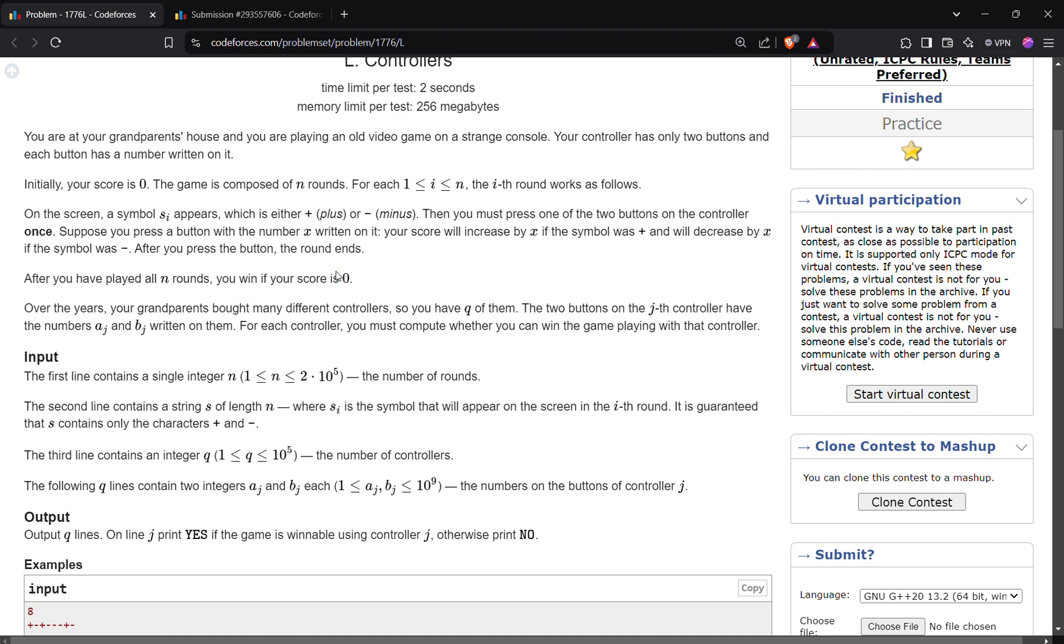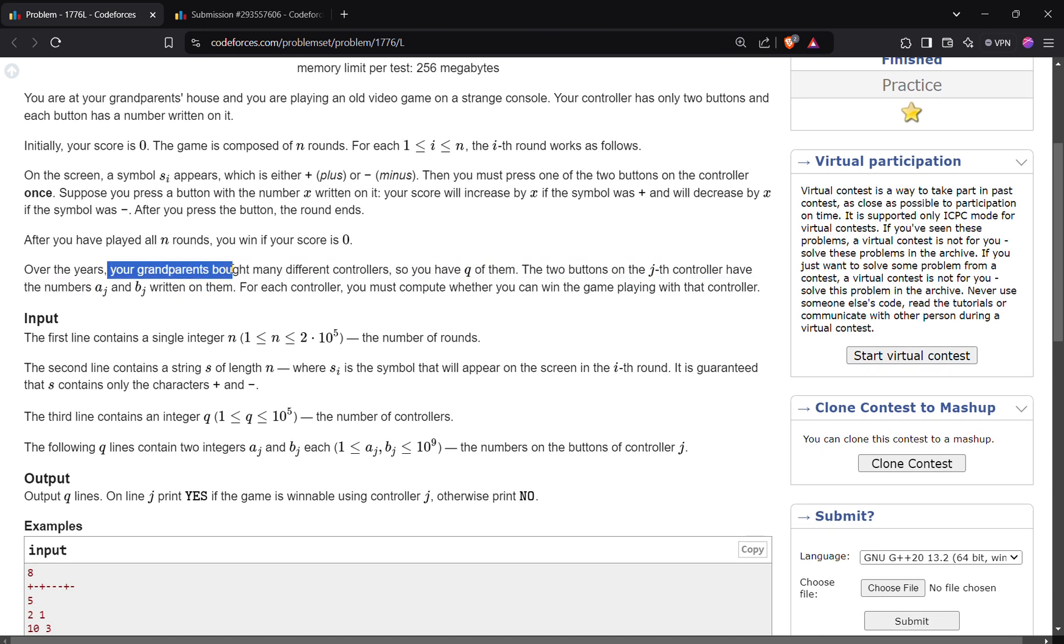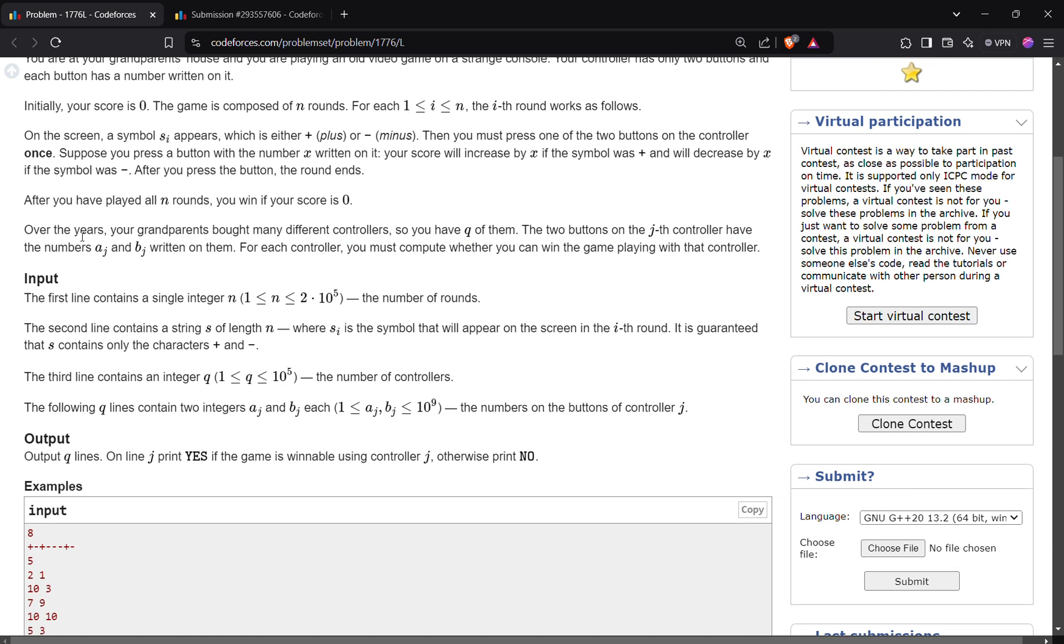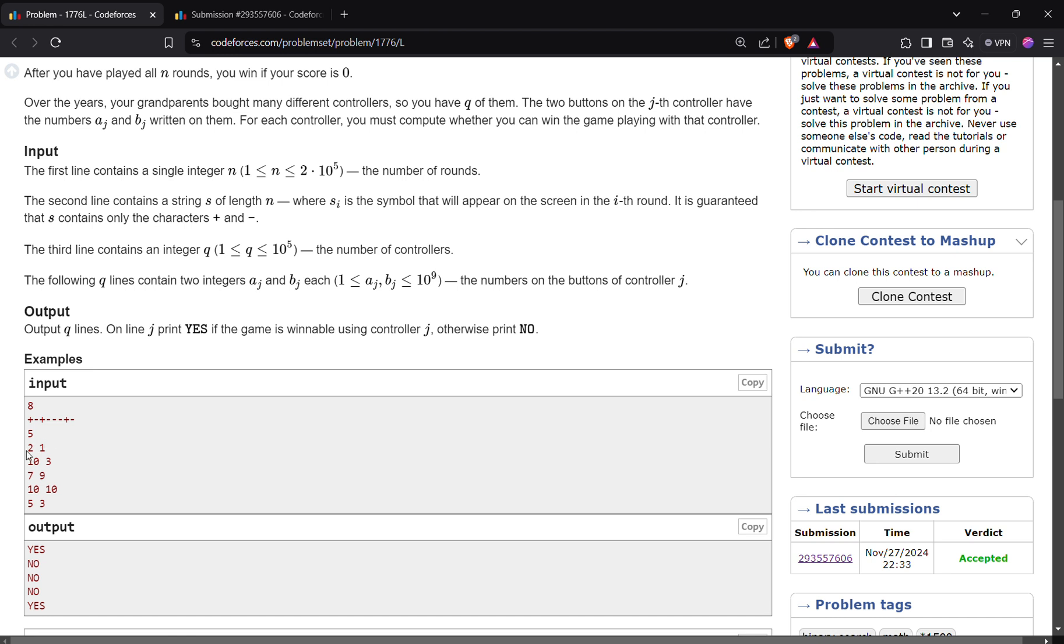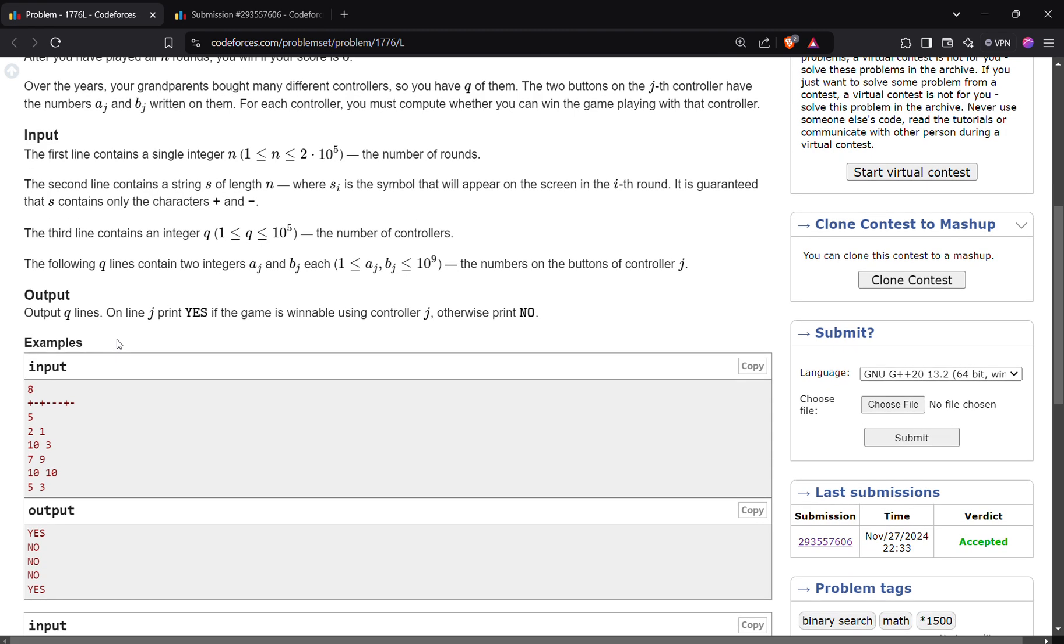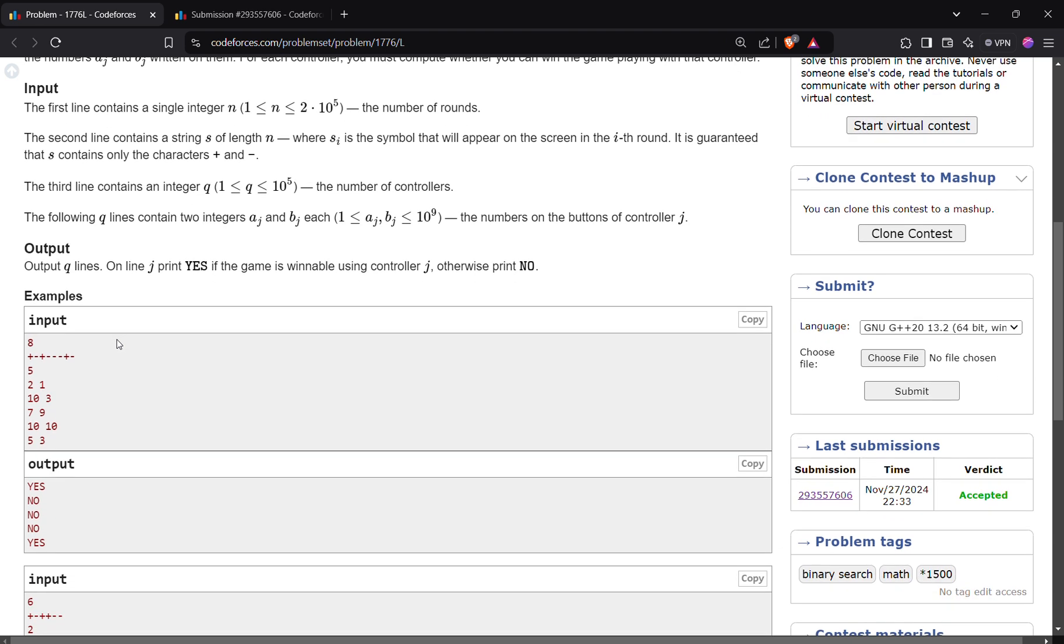After you have played all n rounds, if your score is 0 then you will win. If it is not 0 or if it is impossible to make it 0, you lose. Over the years your grandparents bought many different controllers, so you have Q of them. It is basically given queries.